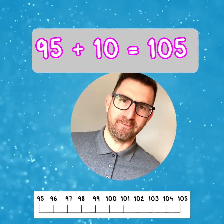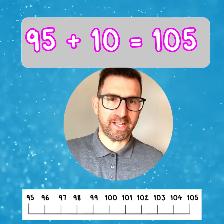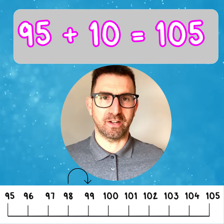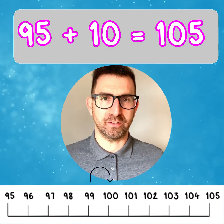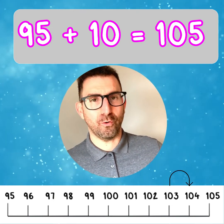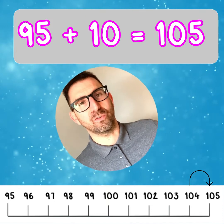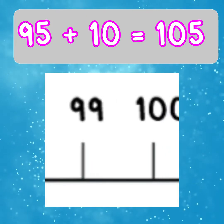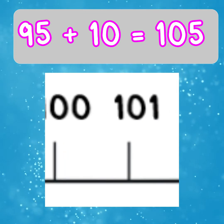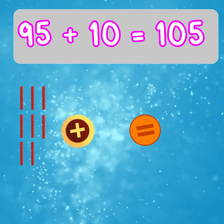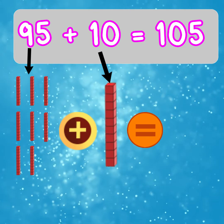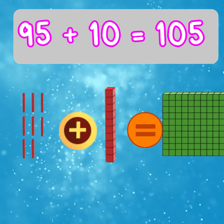Let's try 10 more than 95. If we count on 10 ones, it would be 96, 97, 98, 99, 100, 101, 102, 103, 104 and 105. We can clearly see that it crosses the 100 barrier. Another way to work this out is 9 tens add 1 ten equals 10 tens, which is 100. Then we just add the 5 ones as this digit does not change.